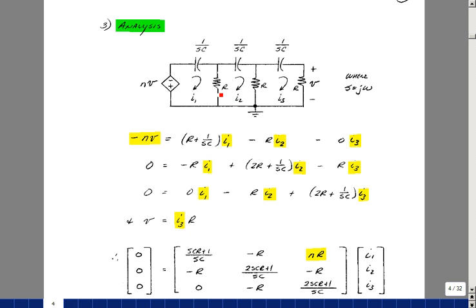On the second mesh, I've got R, R, and 1 over SC, so that's going to go in row 2, column 2. Between meshes 2 and 1, I have a resistor R, so I'll subtract that. And between meshes 2 and 3, I also have a resistor R, so I'll subtract that. Then lastly, around the third mesh, and of course there was no voltage source in mesh 2, so there's a zero here.